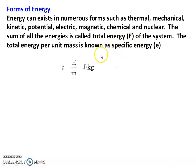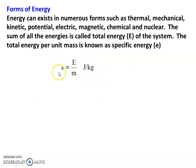The unit for energy is joules. Specific energy is energy per unit mass — joules per kilogram. Small 'e' denotes specific energy, capital 'E' denotes total energy. Capital E is the total energy and small e is the specific energy.